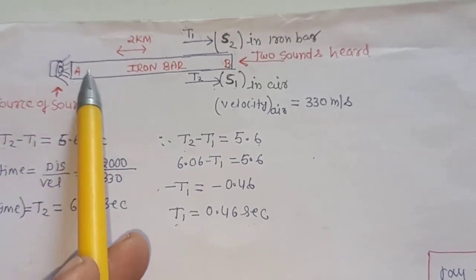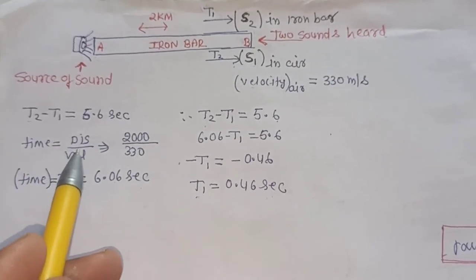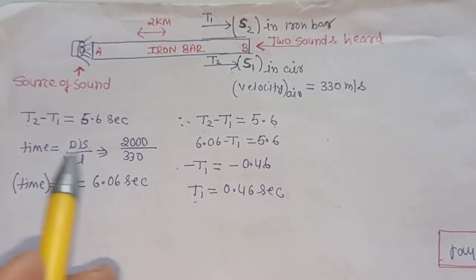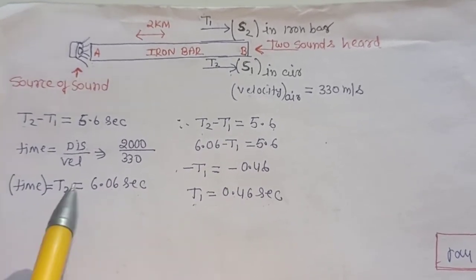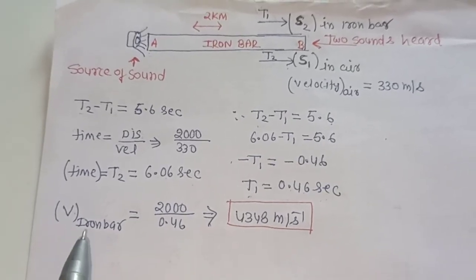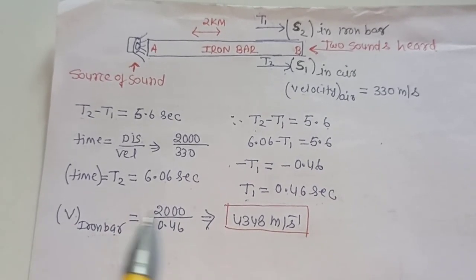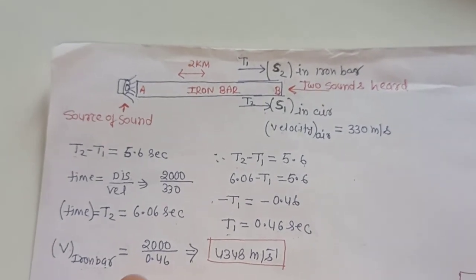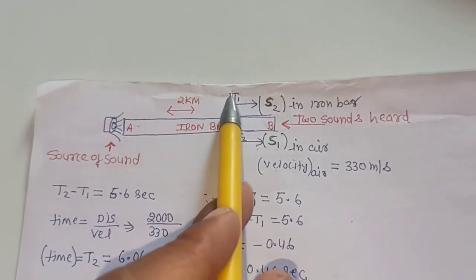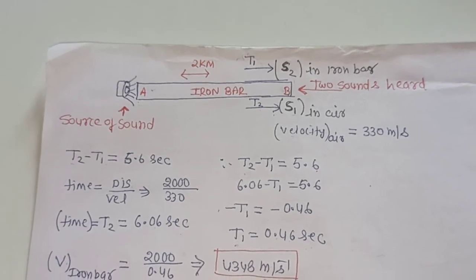We have to find the traveling time by the bar inside. We find the velocity from this formula. Velocity equals distance upon time iron bar. Distance is 2000 meter. The velocity will be 4348 meter per second. T1 value is 0.46 second and the velocity in iron bar will be 4348 meter per second.